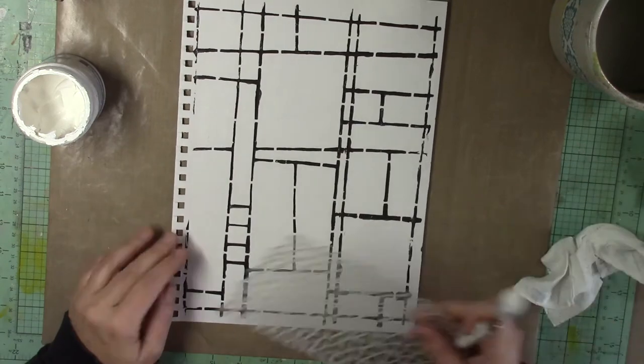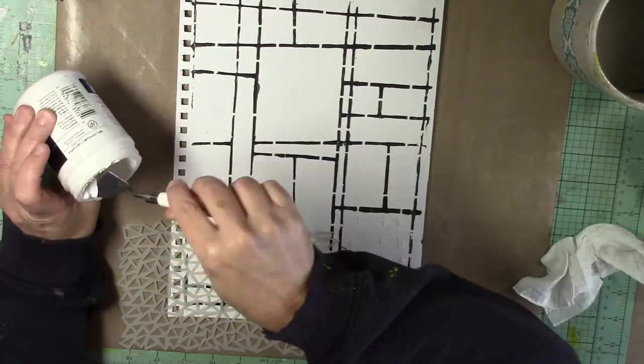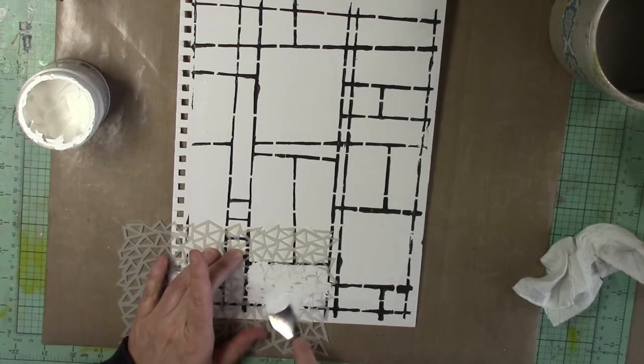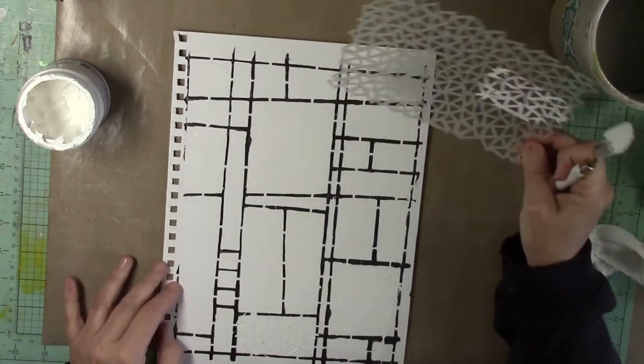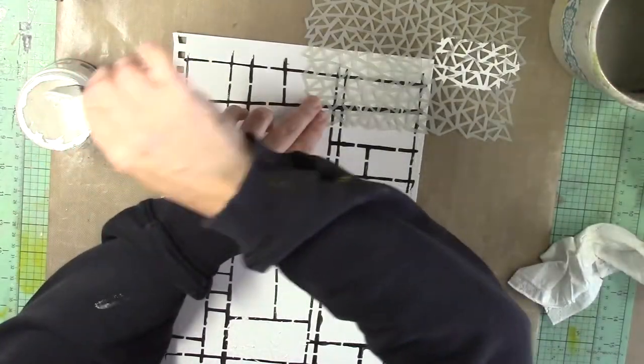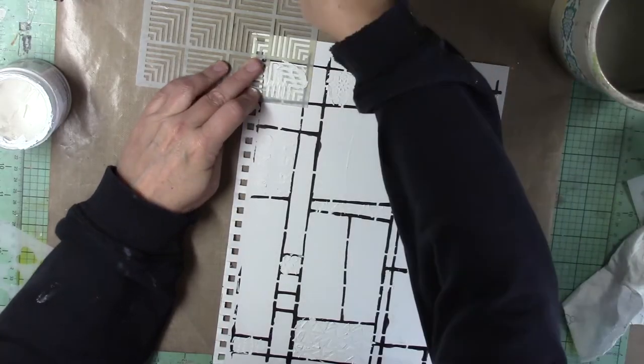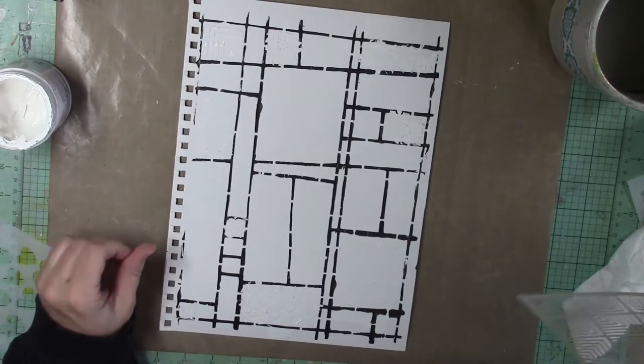I'm alternating them here and there just to create more interest and flow to my art journal page. I'm not being super particular if the gesso gets out of the lines a little bit. I'm wiping some away, but for the most part I'm not being too particular.